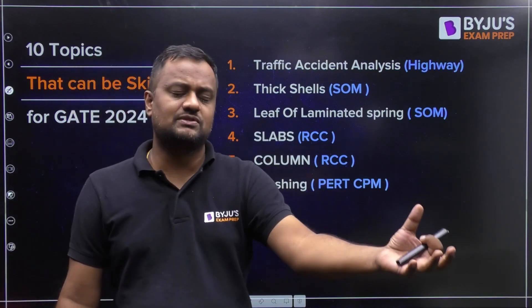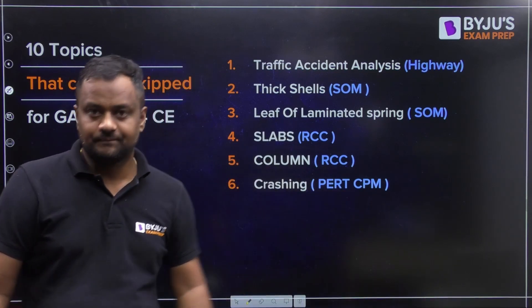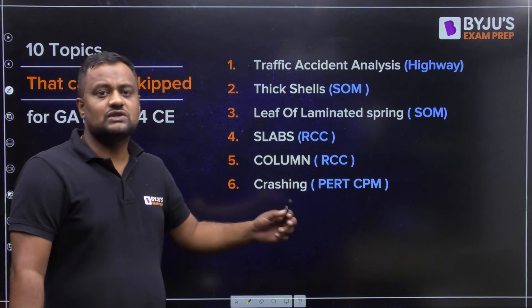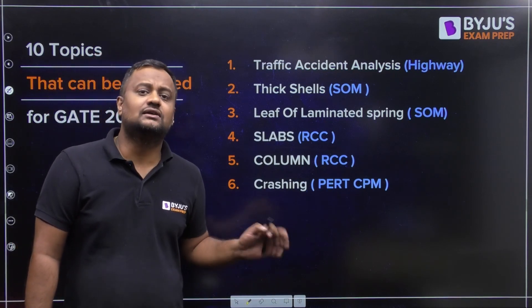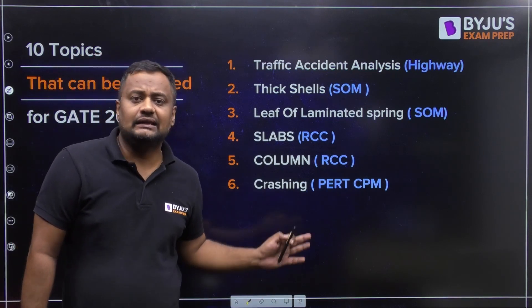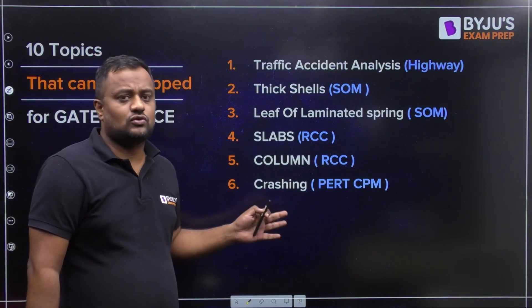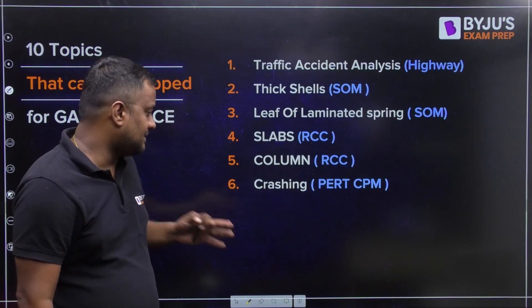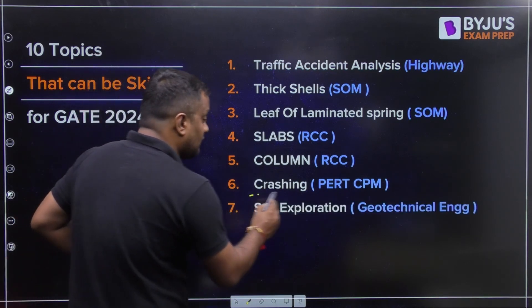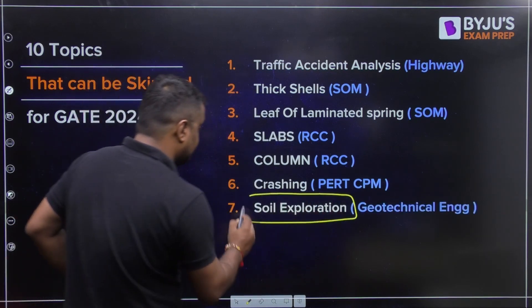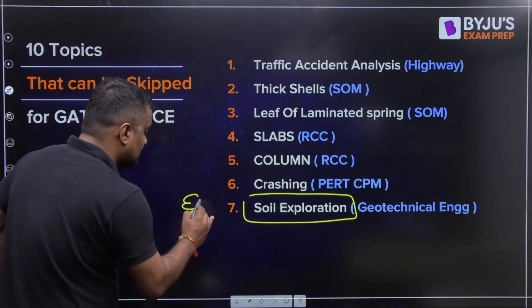The sixth topic is crashing in project management. If a question comes from CPM/PERT, it will typically be of one mark or two marks and will be asked from float or slack. Crashing questions have the least chances of being asked.